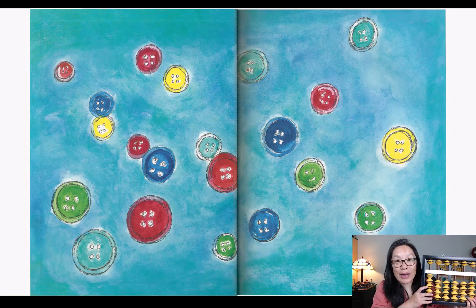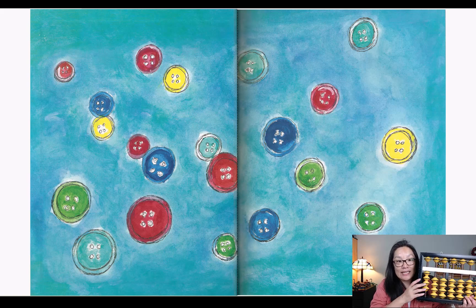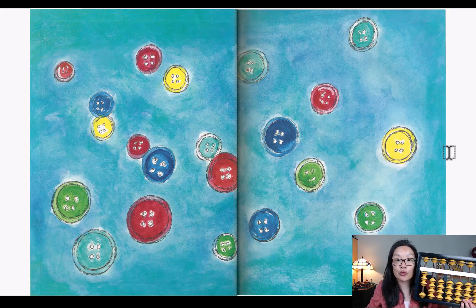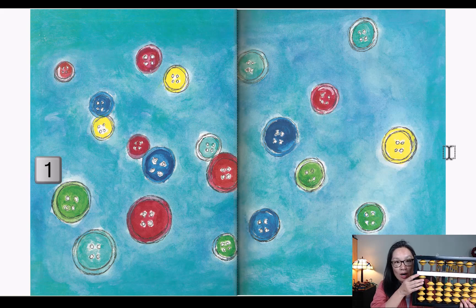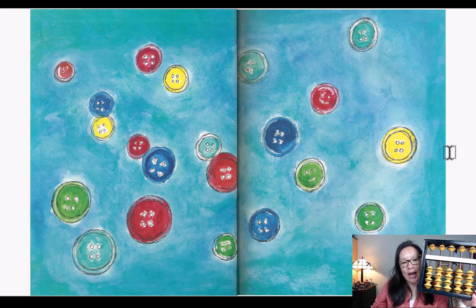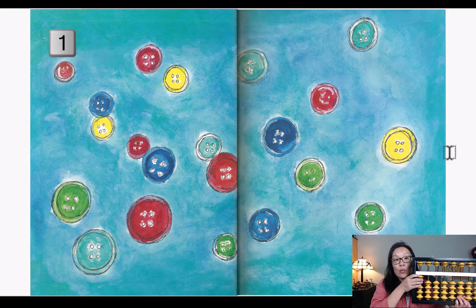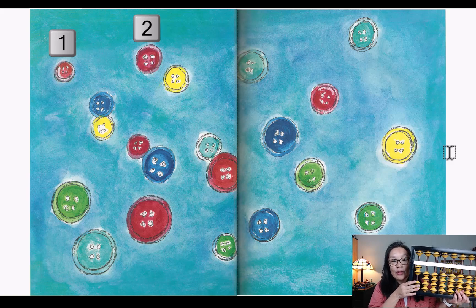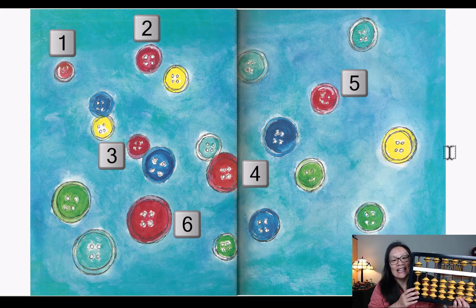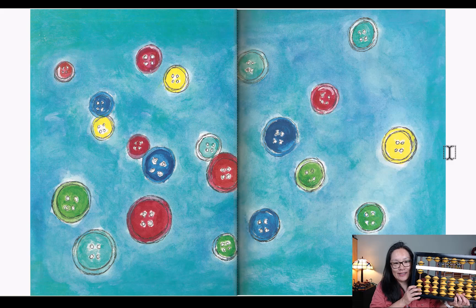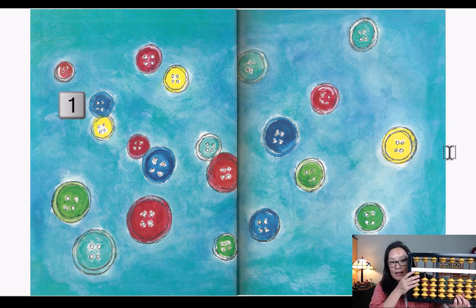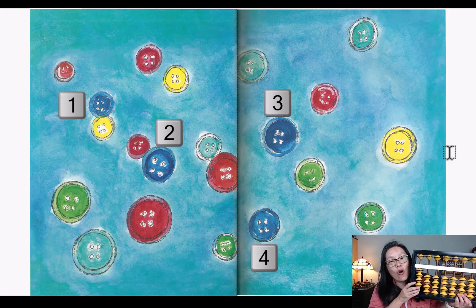Oh, look at all these buttons! How many yellow buttons do you see? I see one, two, three — three yellow buttons. How many green buttons do you see? I see one, two, three, four. How many red buttons do you see? I see one, two, three, four, five, six — six red buttons. What else do we have? Blue! How many blue buttons do we see? I see one, two, three, four — four blue buttons.